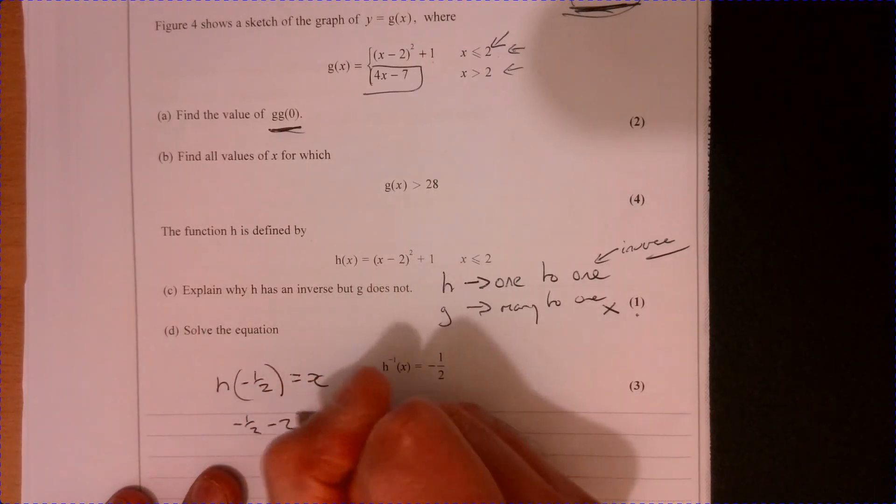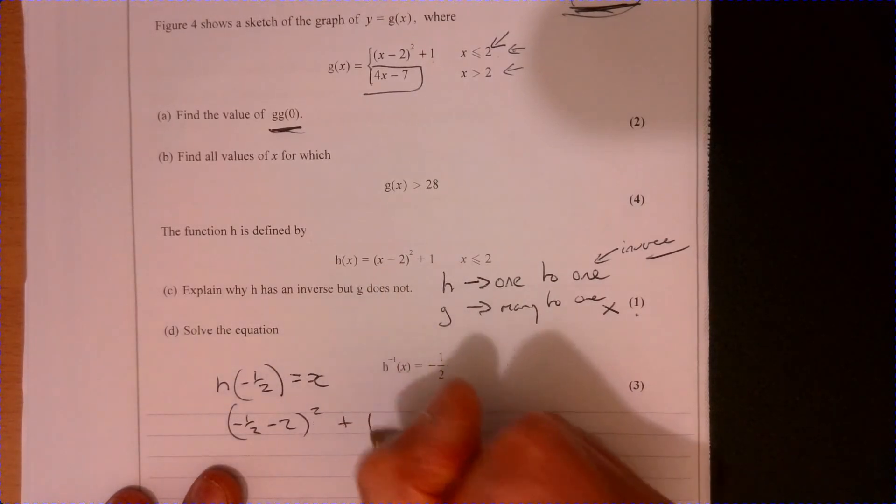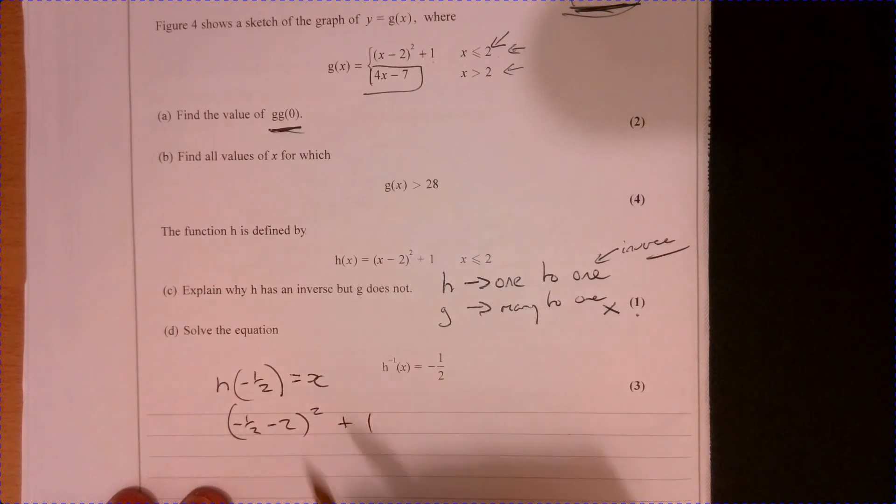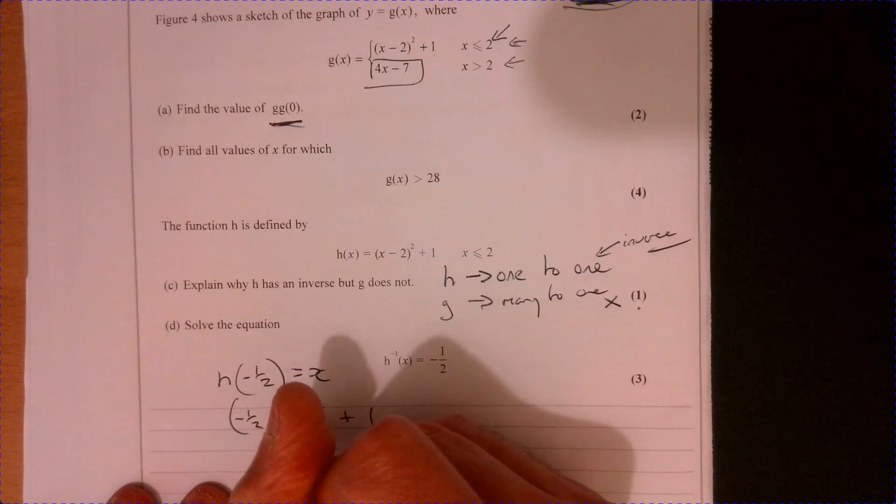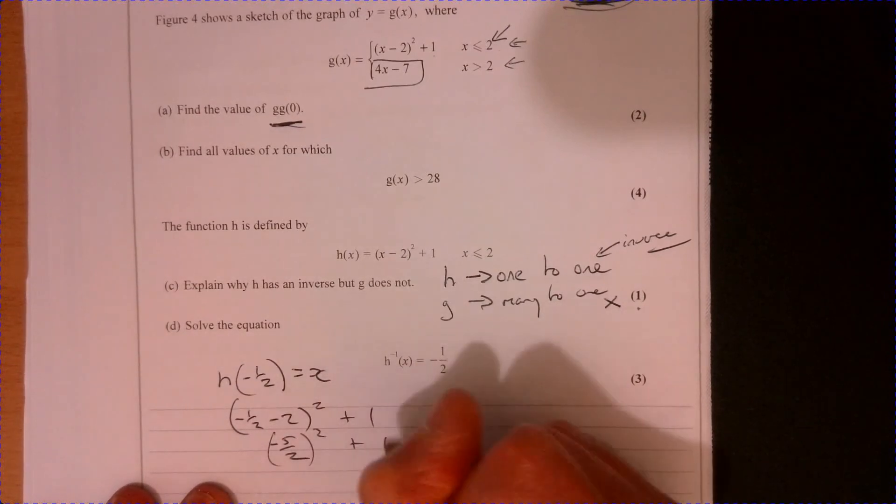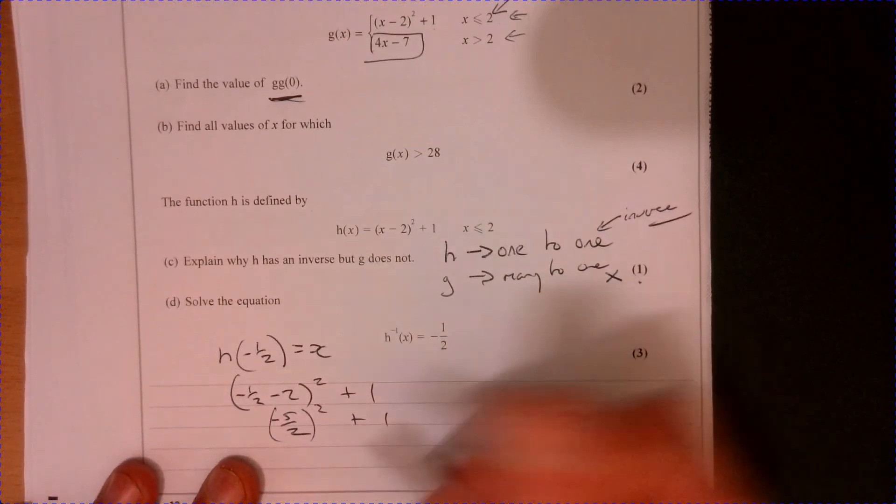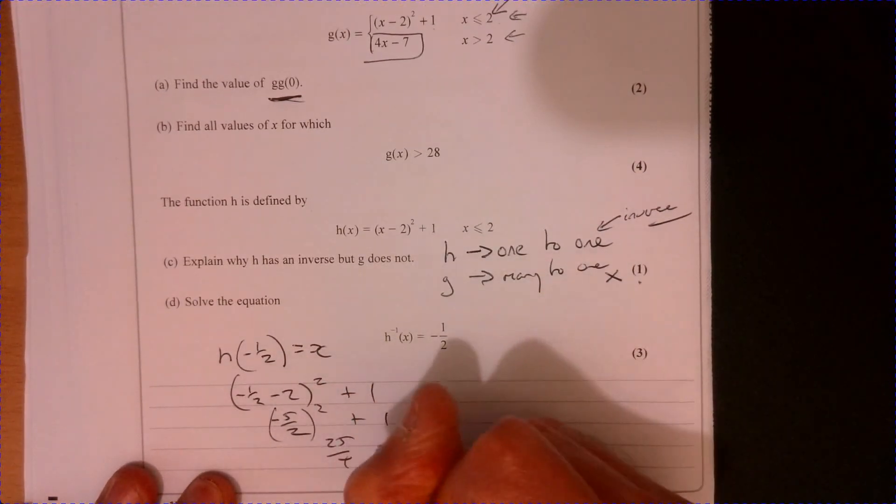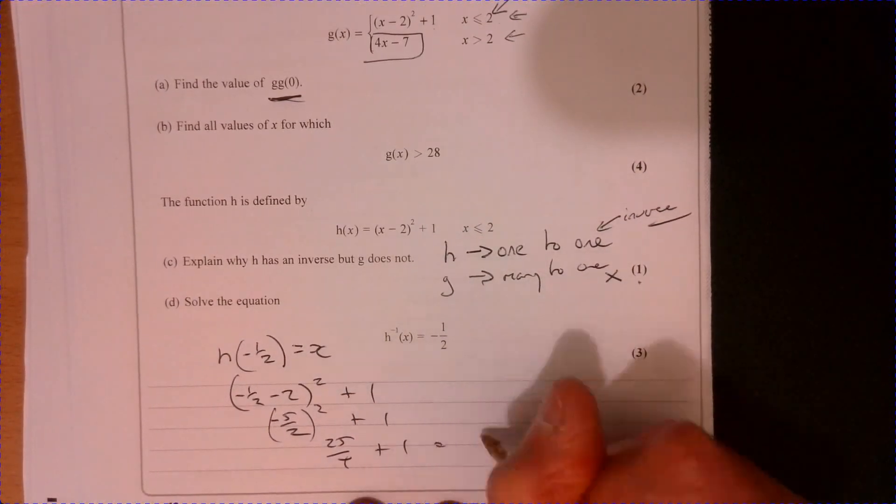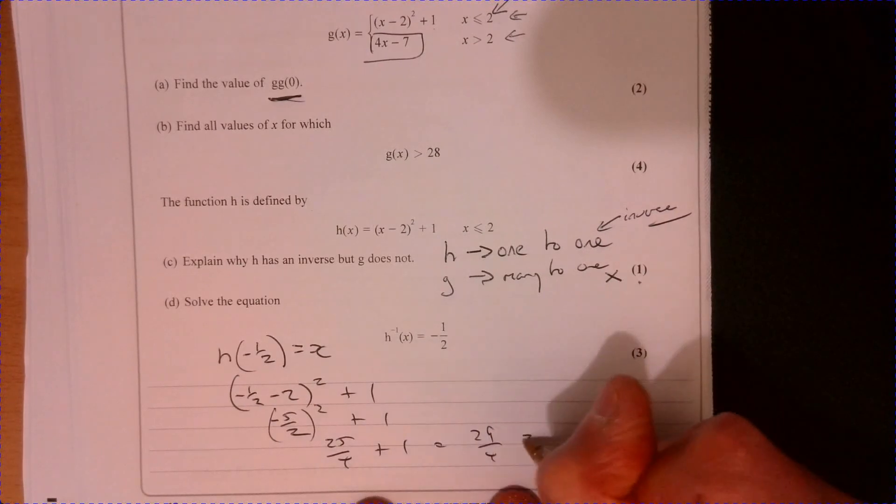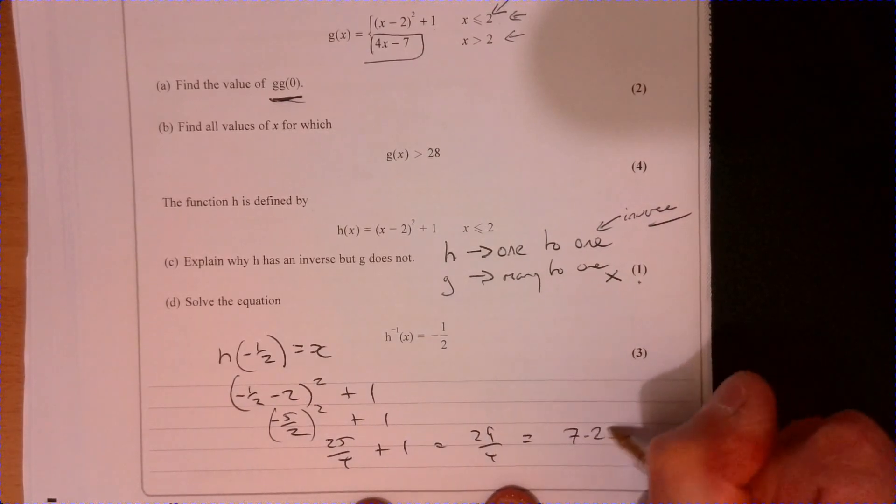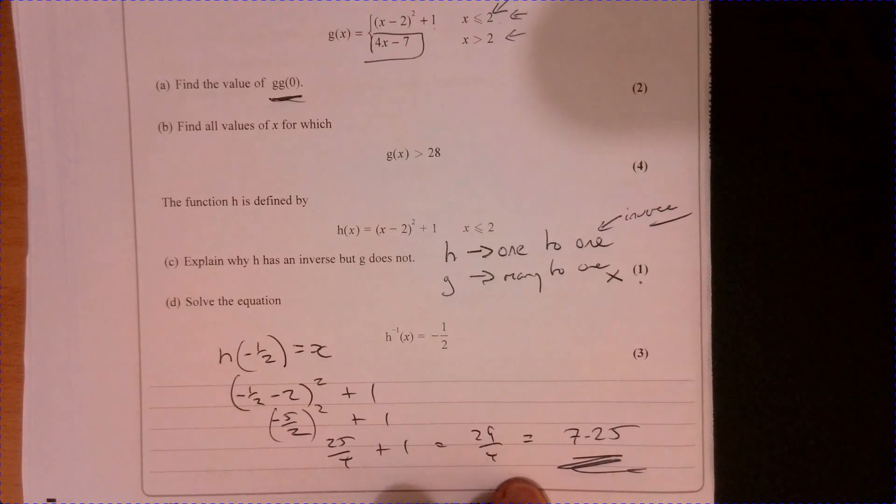So minus a half minus 2 squared plus 1. So that's going to give us minus 5 over 2. And then, remember that squared, plus 1, 25 over 4. Let's make a bit of room for you. 25 over 4 plus 1, that equals 29 over 4, or that's 7.25.